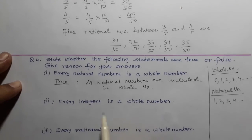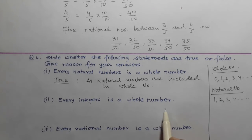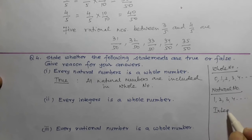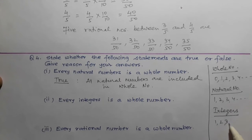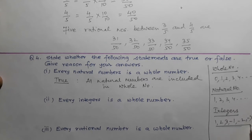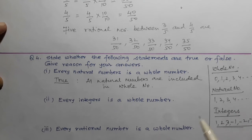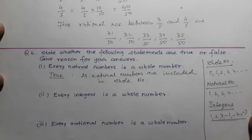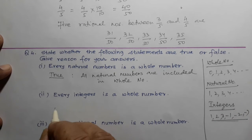Second statement: Every integer is a whole number. Integers may be negative numbers and positive numbers. Integers include 1, 2, 3, minus 1, minus 2, minus 7 — these are all integers. But in whole numbers, negative numbers like minus 1, minus 2, minus 7 are not included. So we will write FALSE.